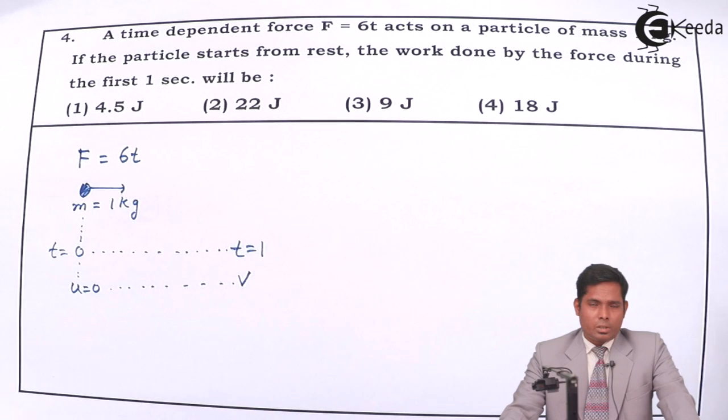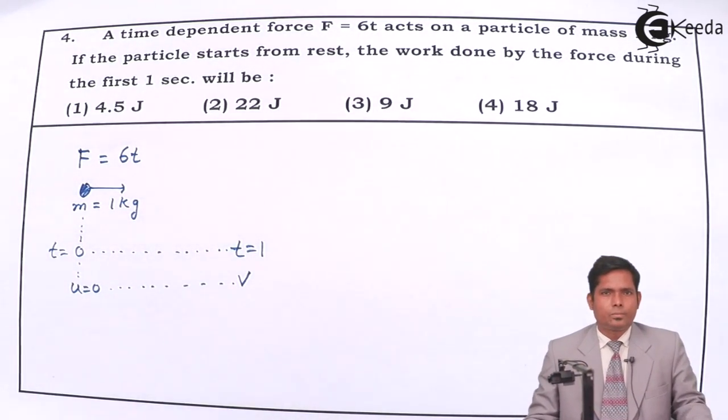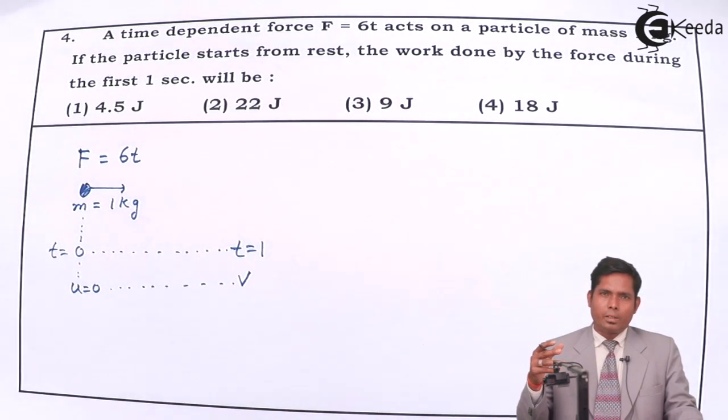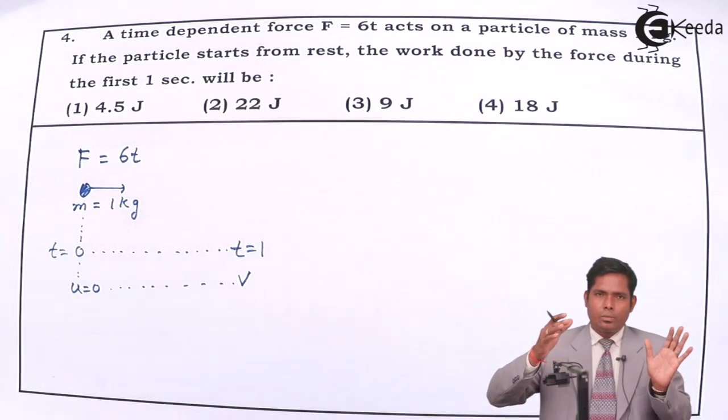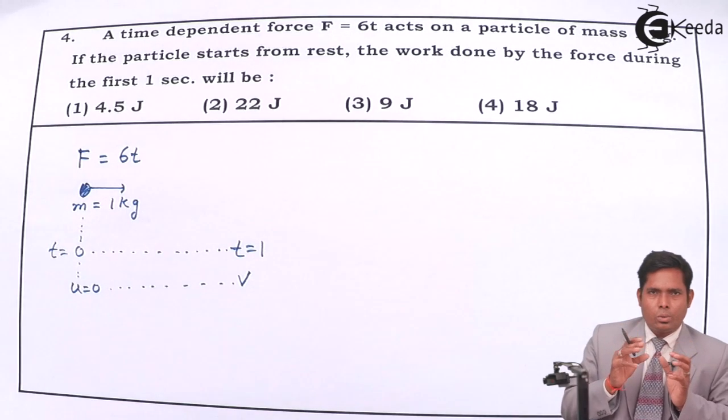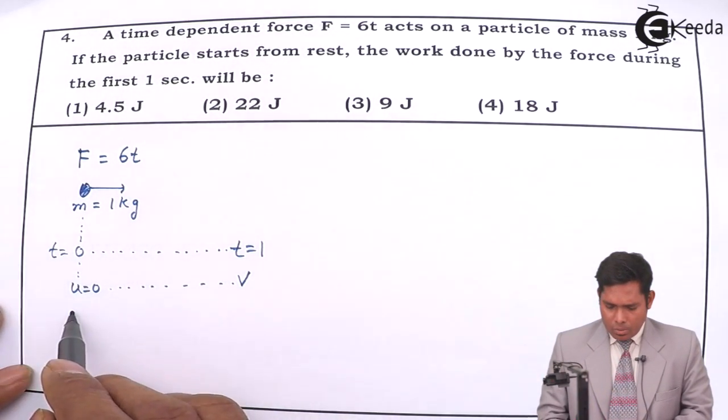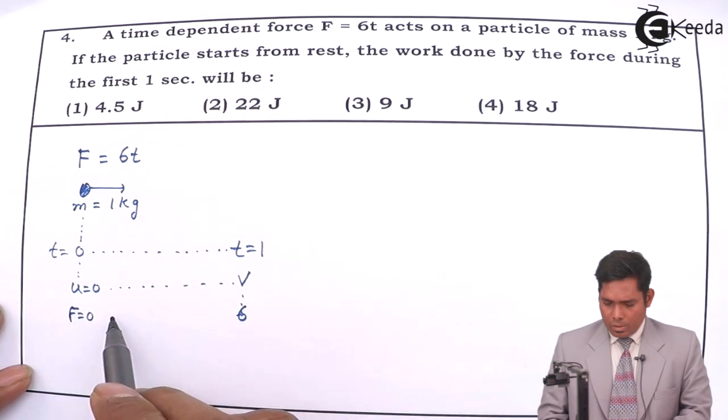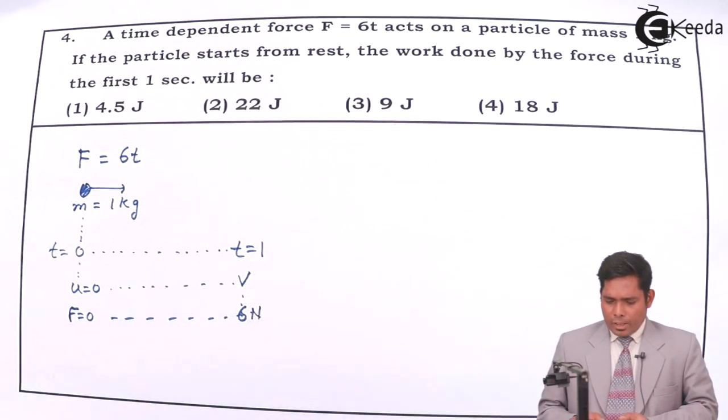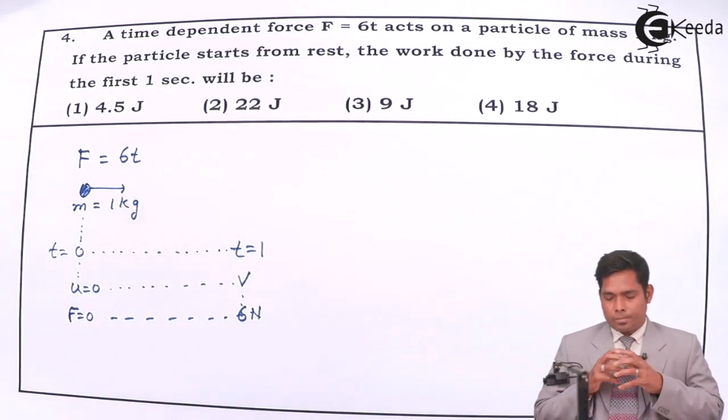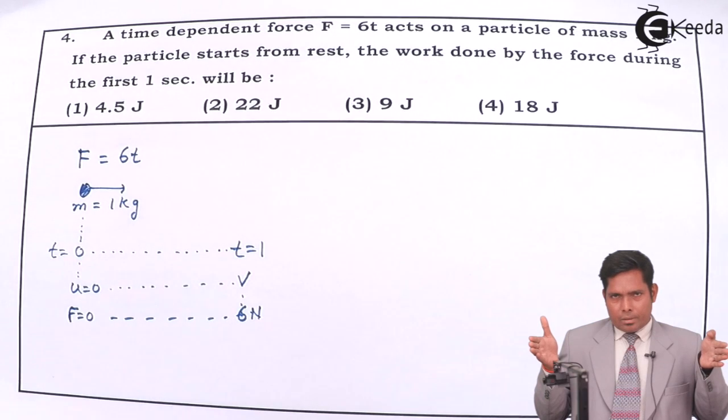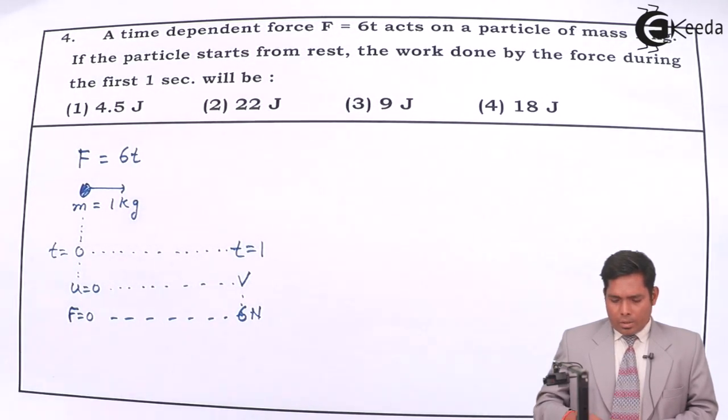One thing is that the force is not constant. If the force is not constant, you cannot write the work done is F into S. Because which F are you going to write? Till time t equals zero, when time t equals zero, the force is zero. So here the force is zero. Here the force is six Newton. So the force is varying from zero to six Newton. The force is not constant. Even if I am finding the displacement, then I cannot write F into S. Because which F am I going to write? So I cannot write like that. Then what will I do?